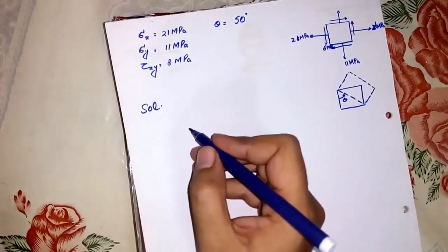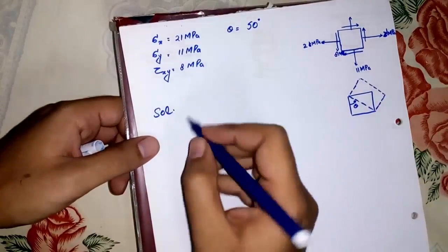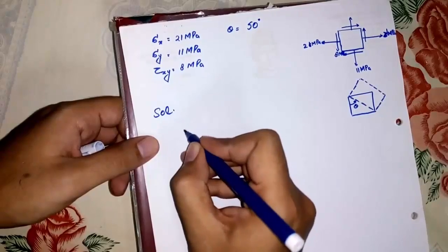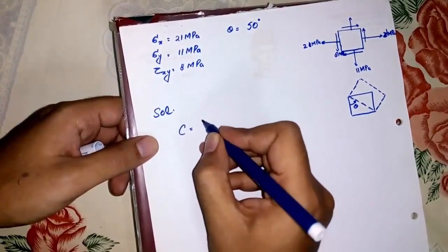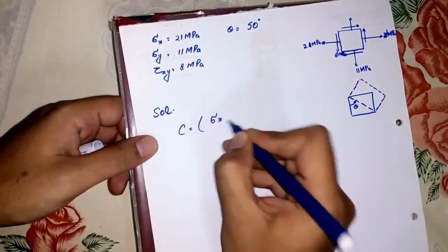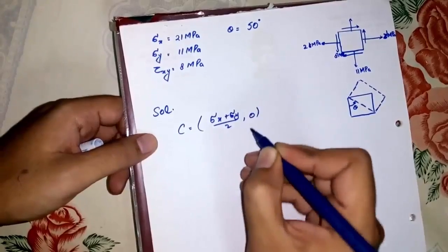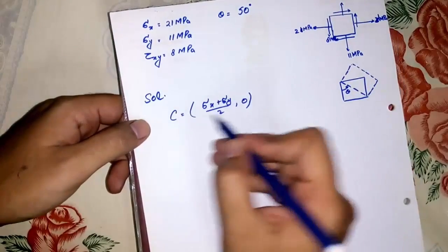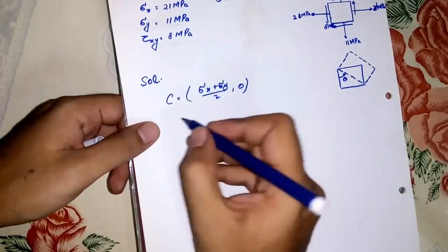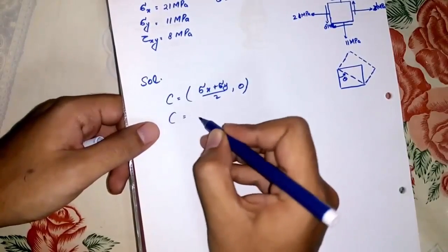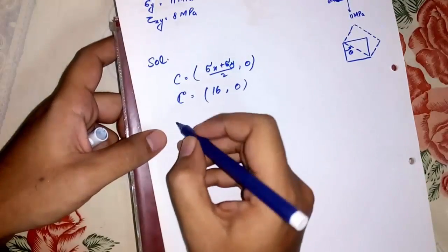First of all, we have to find the center of the Mohr circle. C is the center. The coordinates of the center would be (sigma x + sigma y) / 2 and 0. This 0 shows that the center of the circle would be on the x-axis, which is the sigma axis. By calculating, the center is (16, 0).